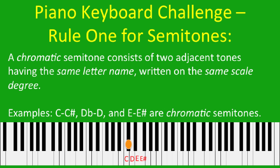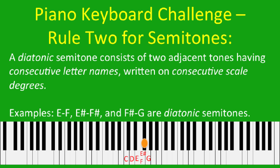Two rules for semitones will help you with today's keyboard challenge. Rule one: A chromatic semitone consists of two adjacent tones having the same letter name, written on the same scale degree — C to C-sharp, D-flat to D-natural, E to E-sharp. Rule two: A diatonic semitone consists of two adjacent tones having consecutive letter names, written on consecutive scale degrees — E to F, E-sharp to F-sharp, F-sharp to G.